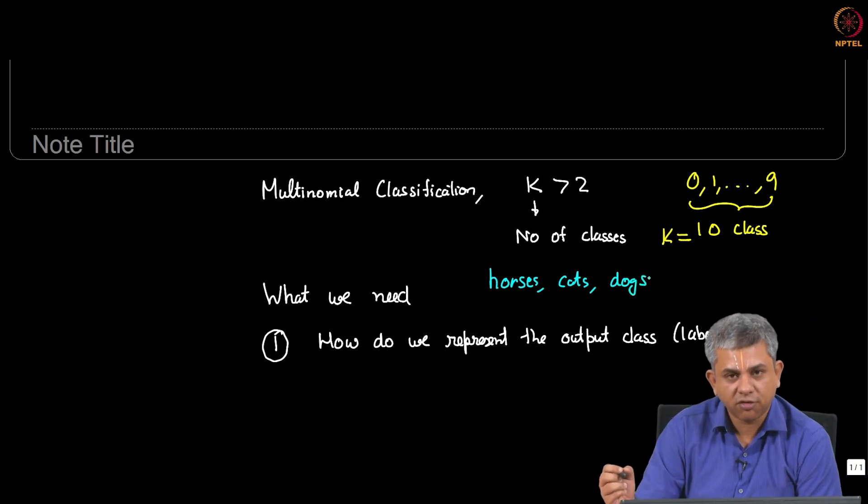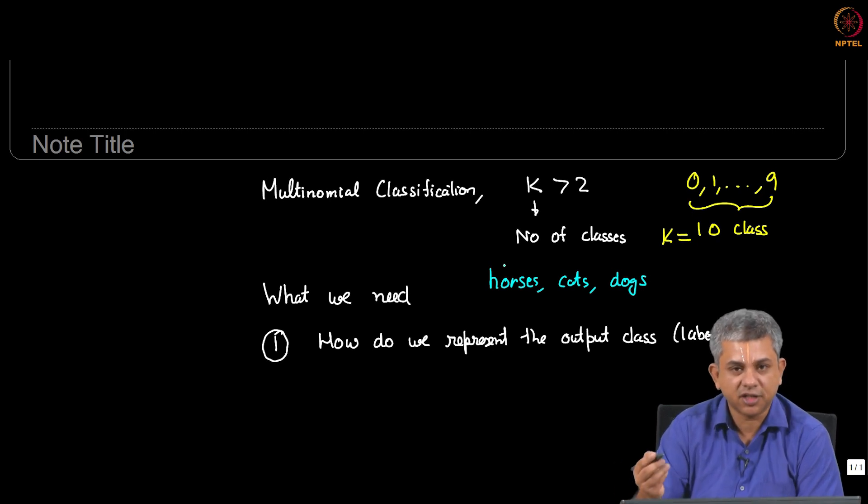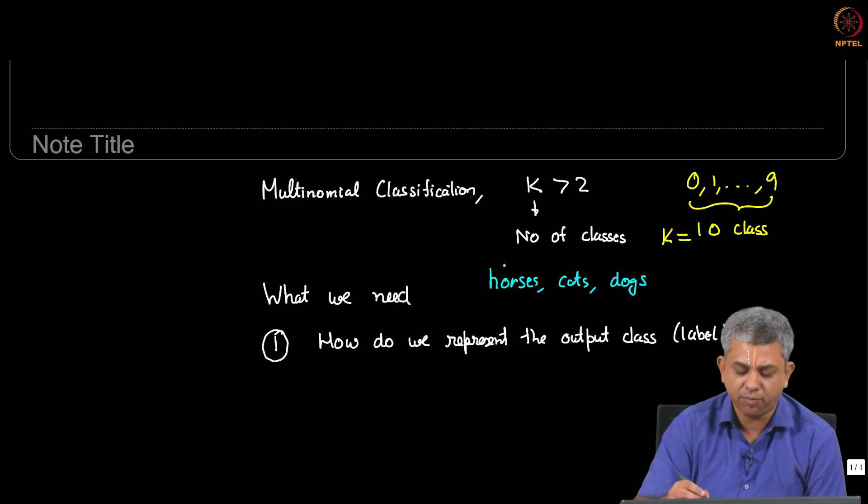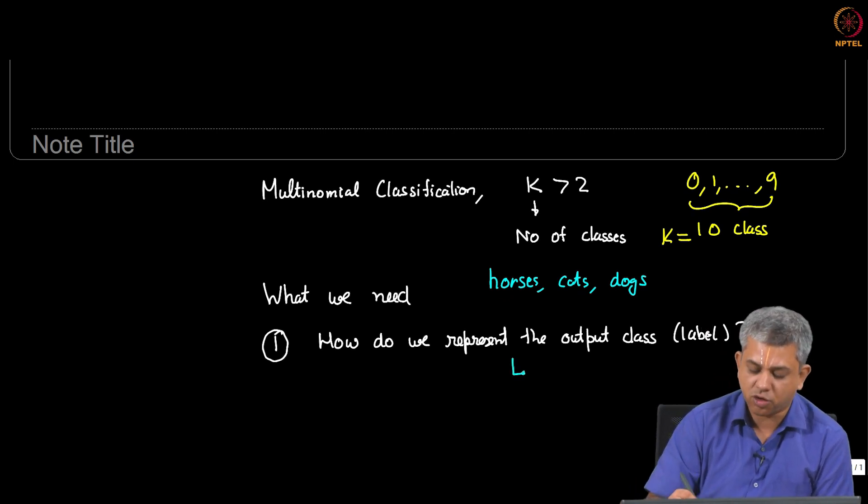You have several choices. Obviously, you cannot label it simply as words. As we have discussed in several videos before, you need to give a numerical label. So one choice is to simply call this class 0, class 1, class 2. That is one possibility. We will look at one other solution which is called the one hot vector.